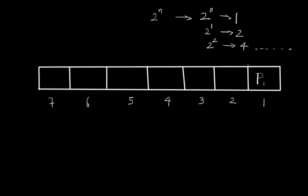At third position we have a data bit. Fourth position there is again parity which is 2 raise to 2, so we would name our third parity bit.